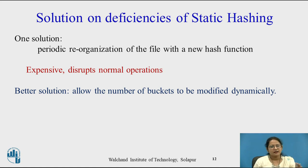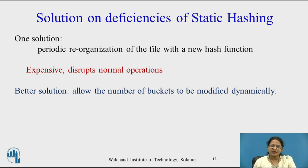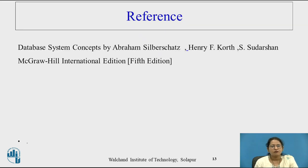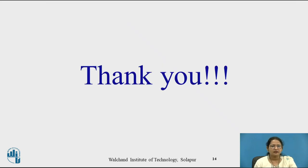At start, when the database is small, there will be fewer buckets. As the database increases, buckets will be added. If the database shrinks, unused buckets will be deleted automatically. This is called dynamic hashing. We will see in the next video what dynamic hashing is. This is the reference. Thank you.